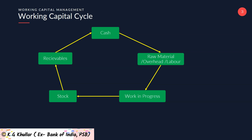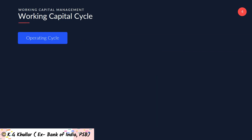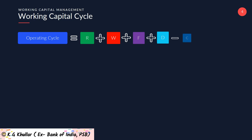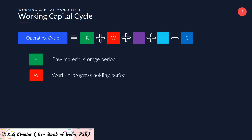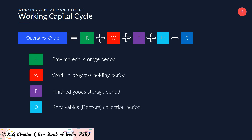It can be calculated by adding the number of days required for each stage in the cycle. In the form of an equation, the operating cycle can be expressed as R + W + F + D − C, where R is raw material storage period, W is work in progress holding period, F is finished goods storage period, D stands for receivables or debtors collection period, and C stands for credit period allowed by suppliers or creditors.